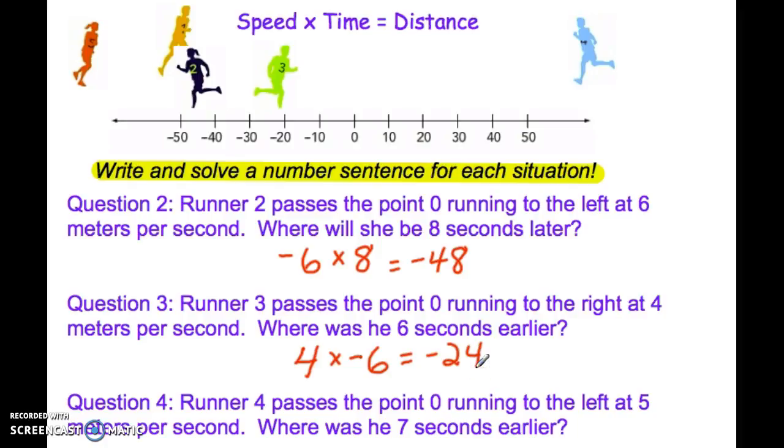Question four. This is runner four. Here he goes. He's running to the left, five meters per second. Where was he seven seconds earlier? So where was he before? In this problem, you should write, he's going five meters per second left, so negative five. Where was he seven seconds earlier? So times negative seven. And you should notice he was at positive 35.